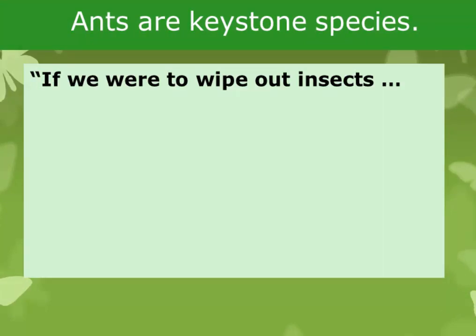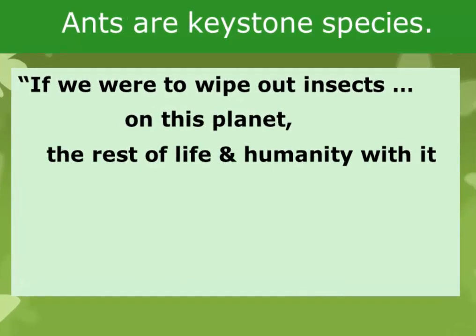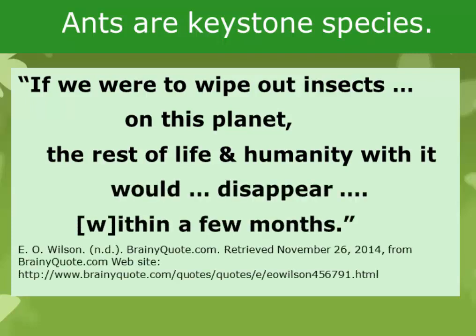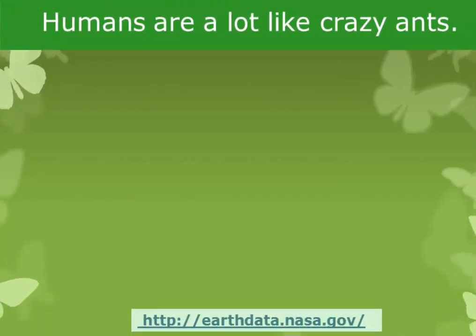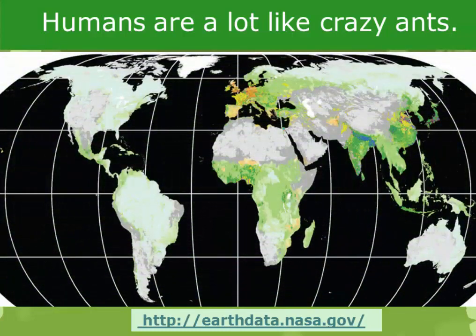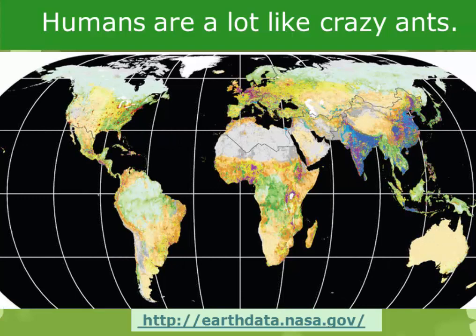Ants have evolved to be keystone species in many ecosystems. In a broader sense, Wilson argues that if we were to wipe out all the insects on this planet, the rest of life and humanity with it would disappear within a few months. Humans, then, have spread in a way that's a lot like crazy ants — we're a globally invasive species and we've rapidly transformed the biomes of the Earth. This image shows a comparison between the biomes of the Earth back in 1700 and in the late 20th century, and you can see this transformation clearly.